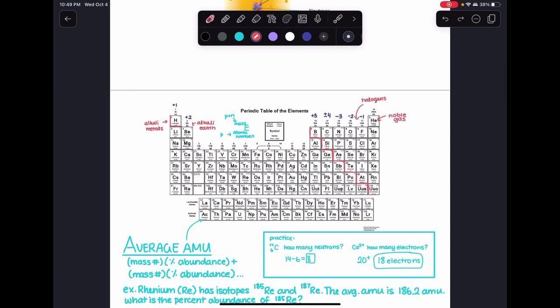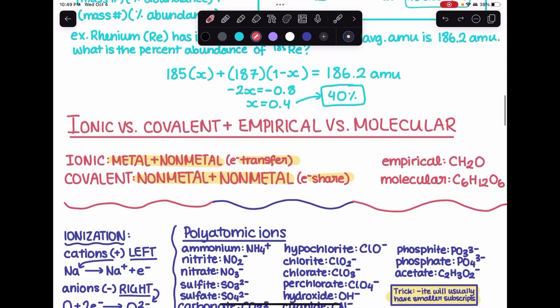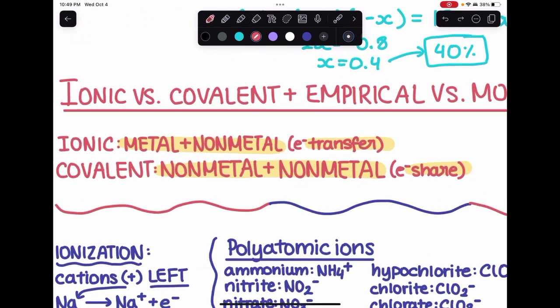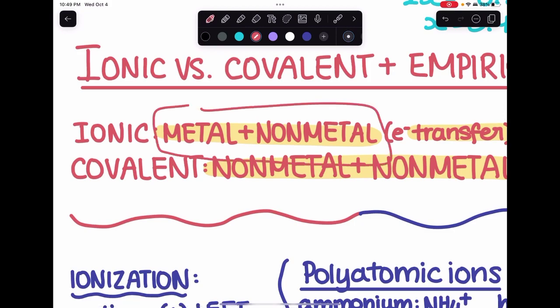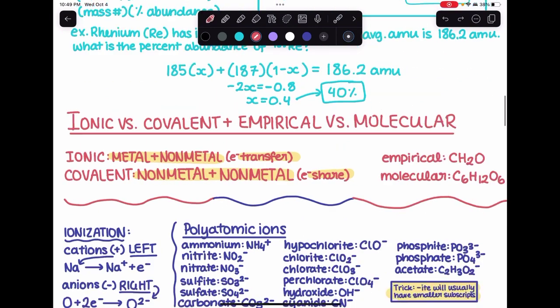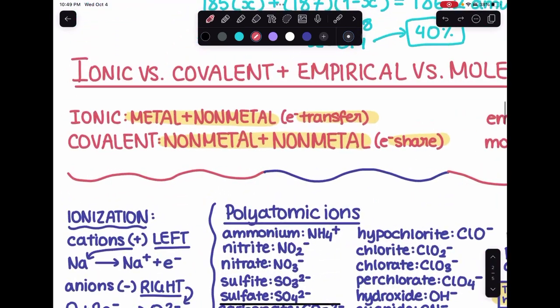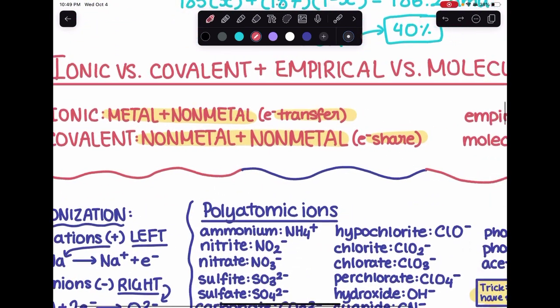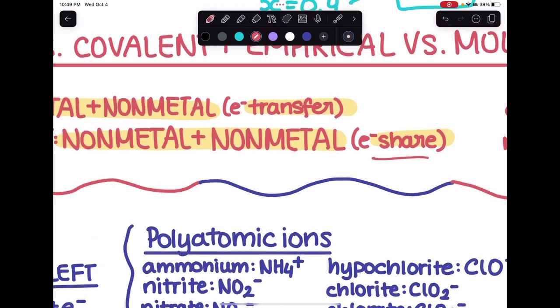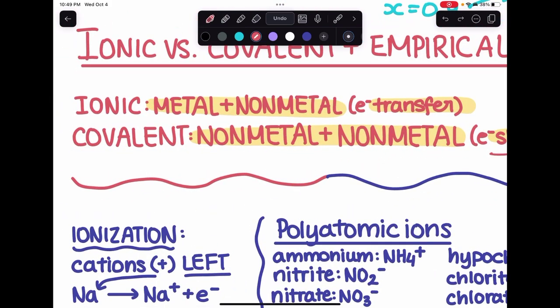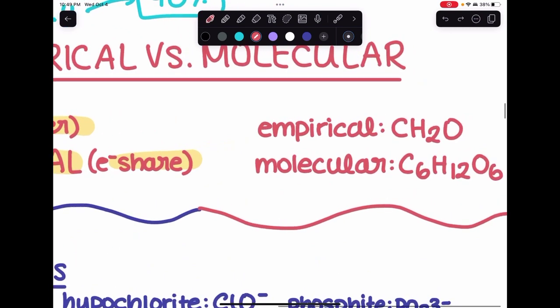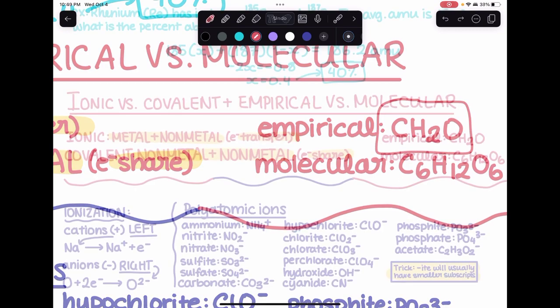Now we're going to talk about ionic versus covalent compounds. Ionic is going to be a metal and non-metal and they're going to transfer electrons. Covalent is going to be non-metal plus non-metal and they're going to share electrons. A little side note here: empirical versus molecular formula, just think of empirical as a simplified version of what molecular formula is.